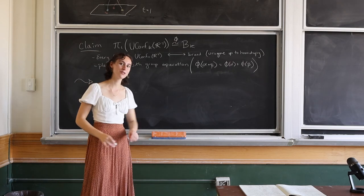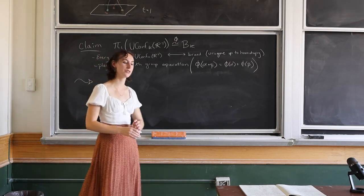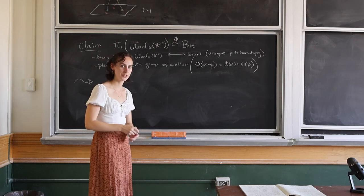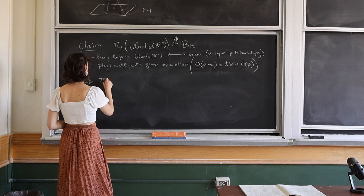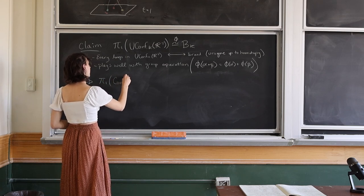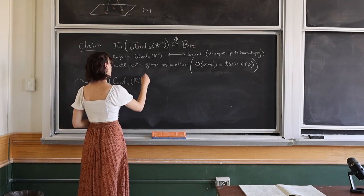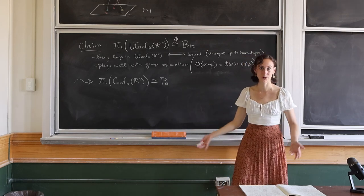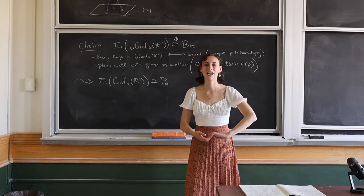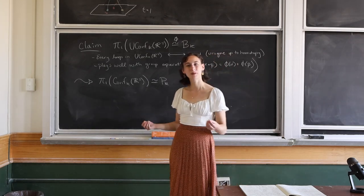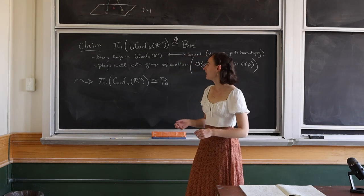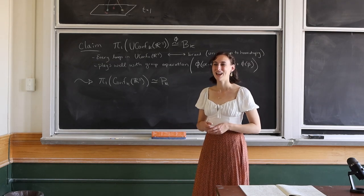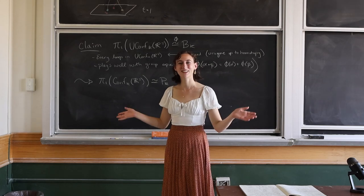As an extension, we have something called the pure braid group, which is exactly the subgroup of the braid group where every strand returns to its own starting position. This is the fundamental group of the ordered configuration space: pi1 of Conf_K(R2) is isomorphic to P_K, where P stands for the pure braid group. That is all I wanted to tell you today. I hope this was interesting and gives a little more concreteness to the dance film. I encourage you to look up more about configuration spaces — I think they're really neat, and you might too. Thank you for watching, and as always, keep exploring.